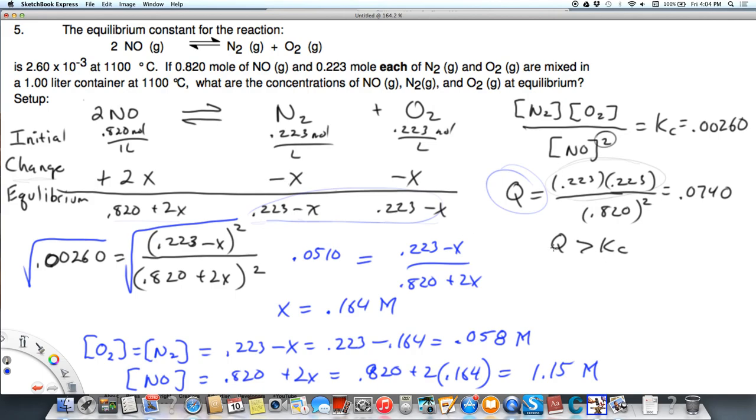If Q was less than K, we would need to get rid of reactants. So this would be negative, and this would be positive. And then we just go ahead and solve it using the K values that we're given. It's important, though, not to just stop at X, but make sure you solve for the values that you're asked for.